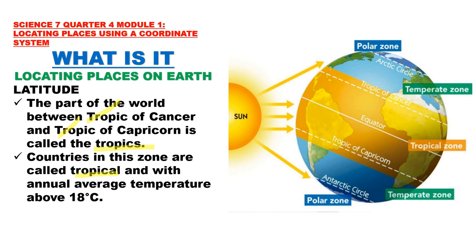Countries in the tropical zone are called tropical, with annual average temperatures above 18 degrees Celsius. Areas found between the Tropic of Cancer and the Tropic of Capricorn are called the tropics — the tropical zone. Countries located in the tropics experience an annual average temperature above 18 degrees Celsius, and in these areas, they only have two seasons: wet and dry.